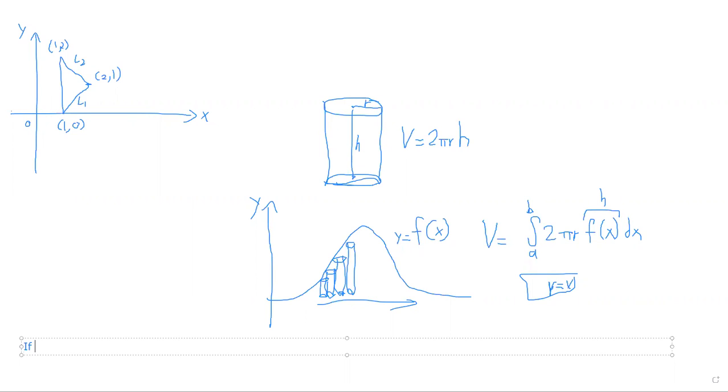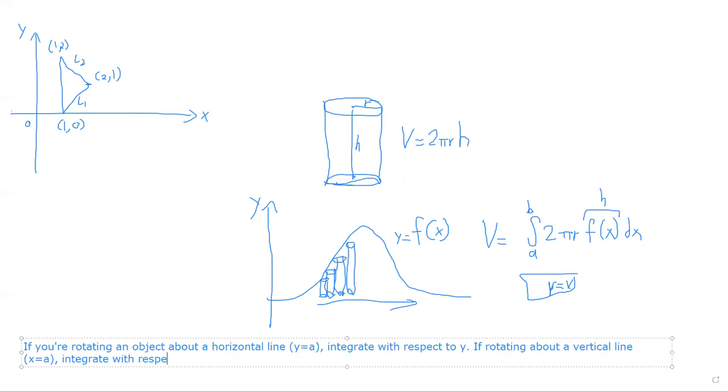Yeah, and there's also a rule of thumb if you're using it with respect to f(x) or f(y), and I'm just going to state that rule here. If you're integrating, if you're, sorry, not integrating, if you're rotating an object about a horizontal line, in other words, y is equal to a, where a is a real number, integrate with respect to y. It's different in the other method, the dishwasher method, we integrate with respect to x in such a case. If rotating about a vertical line, x equals a, integrate with respect to x, which is, again, opposite to what we did last time. So I hope you take a second to look at this. I'm going to be deleting all this.